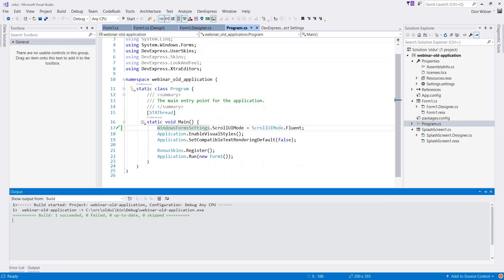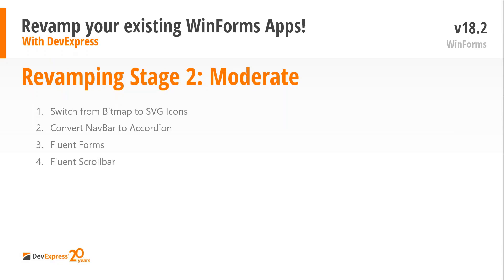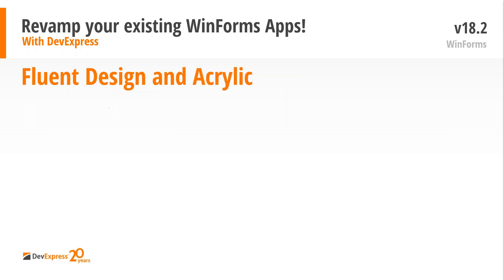There are obviously quite a few more things we can do in the moderate section, but I've decided to point out the nicest ones that don't cost too much time. To summarize what I did: I switched from bitmap to SVG icons, converted the navbar to the accordion control, showed you how to use fluent forms, and turned on the fluent scrollbar. You might be wondering about all that stuff about Fluent Design and even acrylic — let me explain.